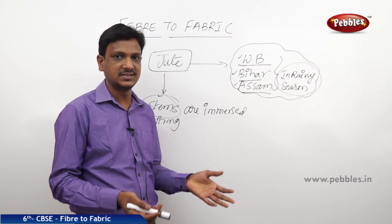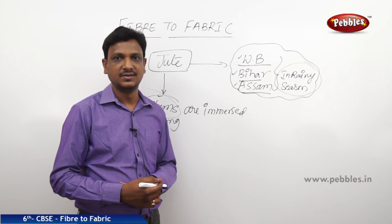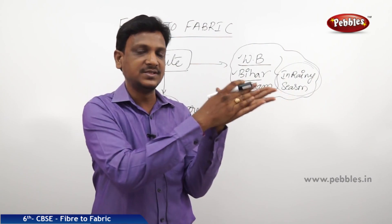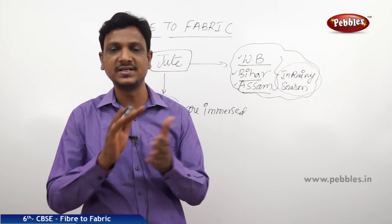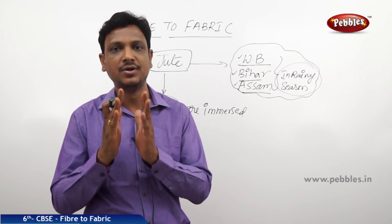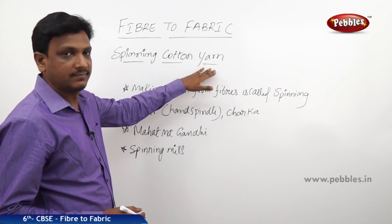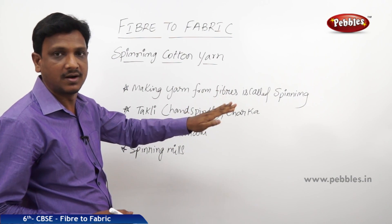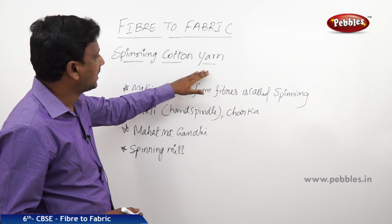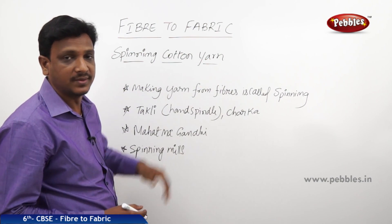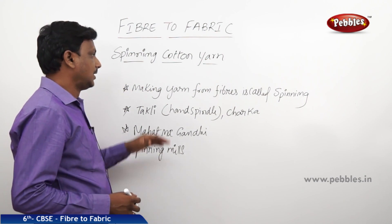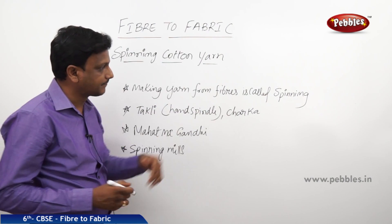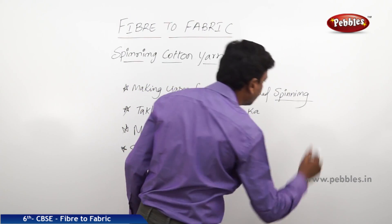We have seen cotton fibers and jute fibers. Fibers are made into fabric, but not directly — first the fiber is made into yarn, and then the yarn is made into fabric. The process of making fibers into yarn is called spinning.